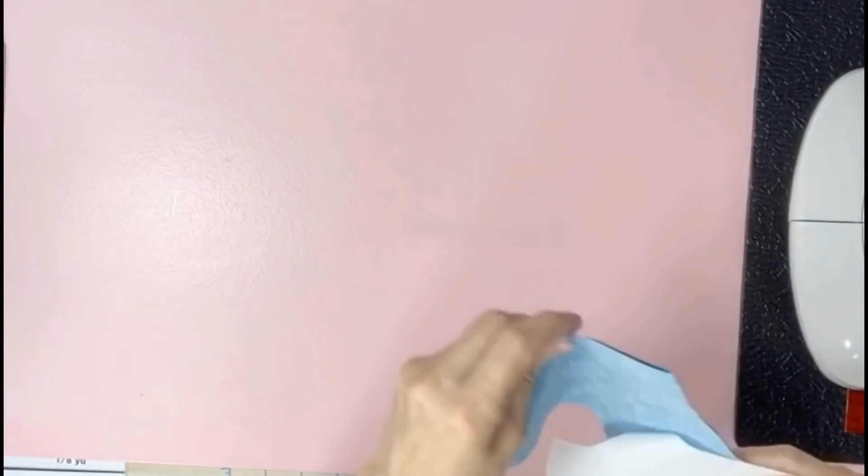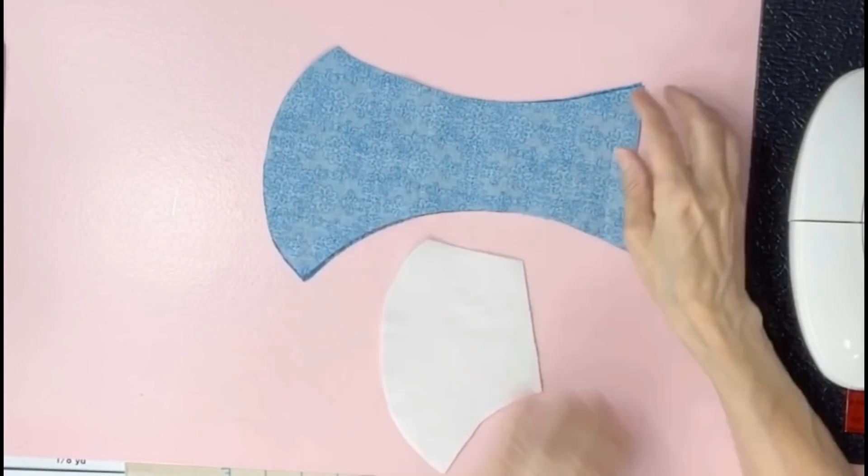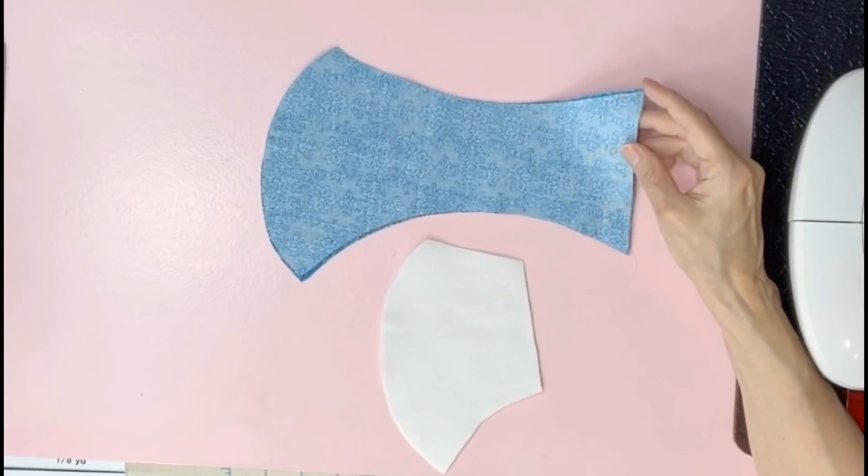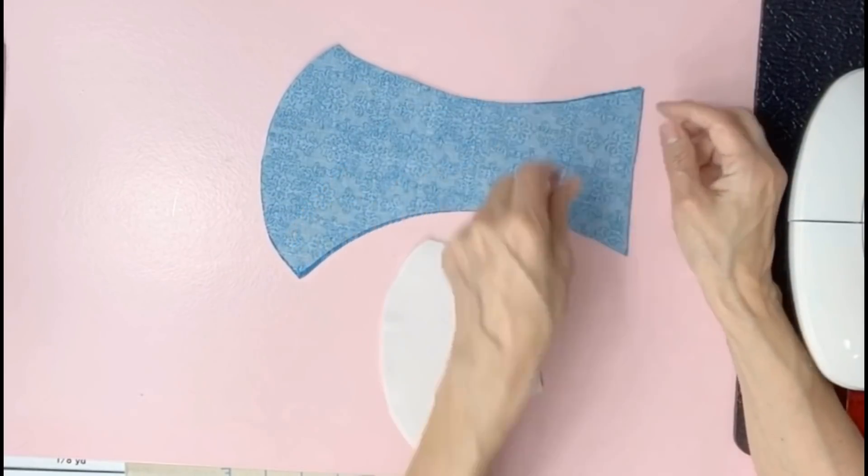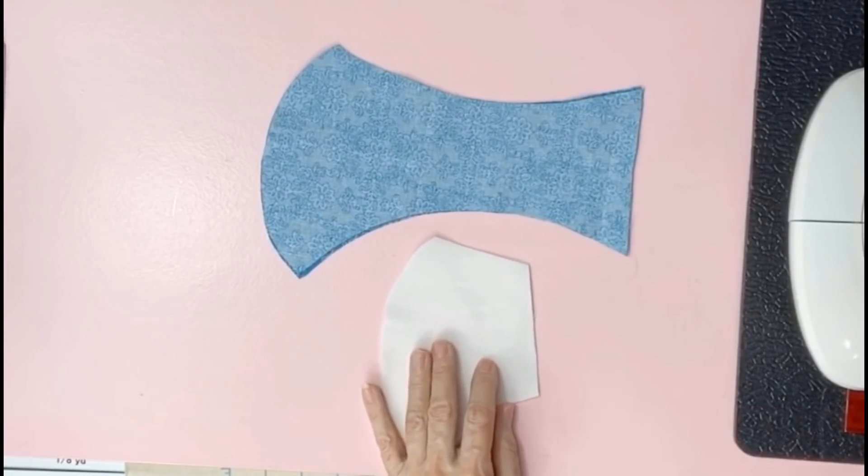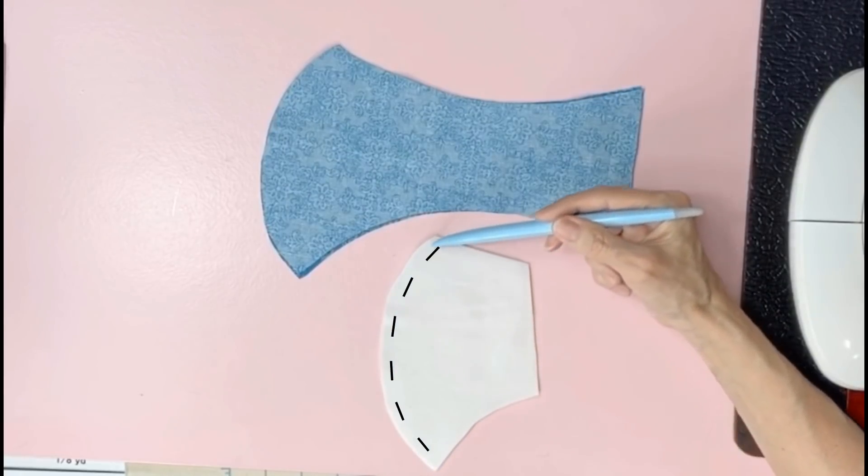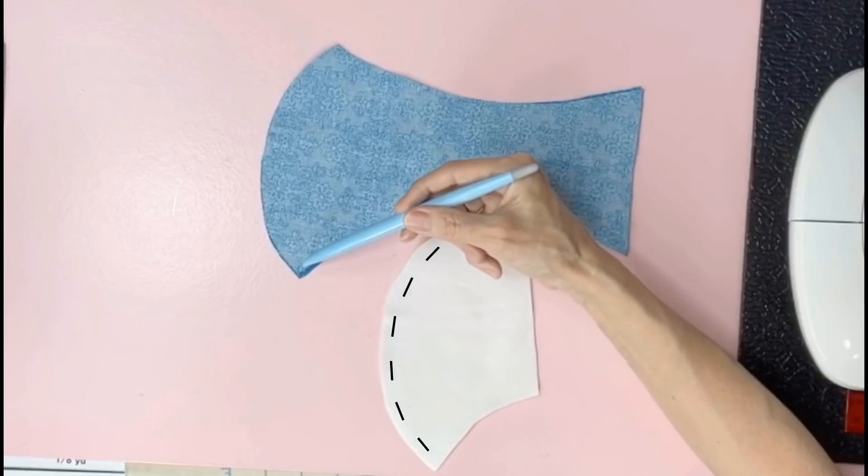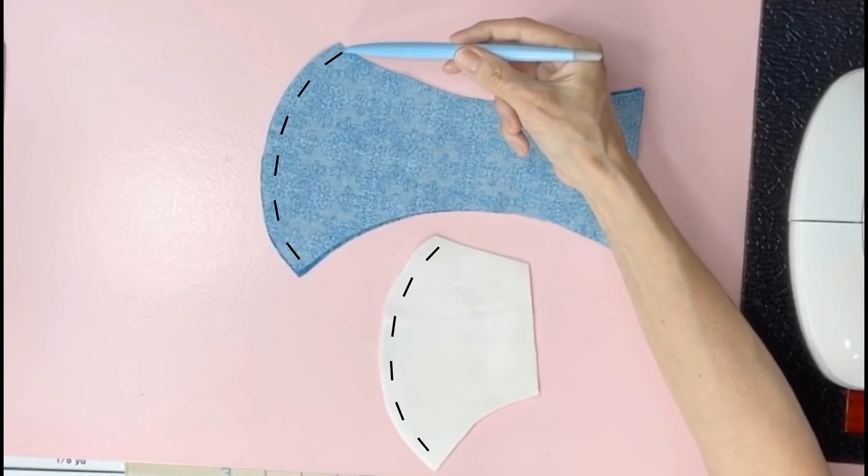Next we'll cut out two pieces of material and I'm using 100% cotton and you want to pre-wash that first before cutting it. Put right sides together. Do that for the lining as well and we'll take it to the sewing machine and we're going to sew a quarter inch from the edge. Stop right there and the same thing with the front of the mask. Stop right there.